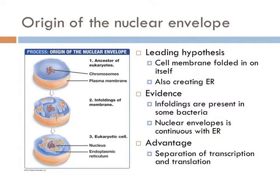The leading hypothesis to explain the origin of the nuclear envelope is based on the in-foldings of plasma membrane. It is thought that the cellular membrane began to fold into itself and at some point separated from the outer cell membrane and came to envelop the chromosomes. This was the primitive nucleus.